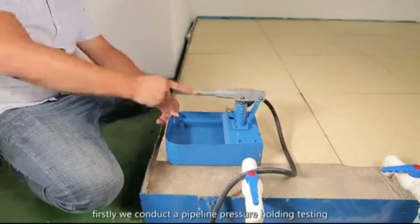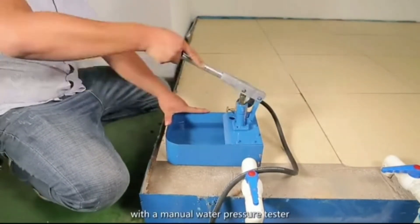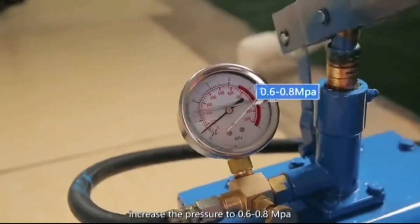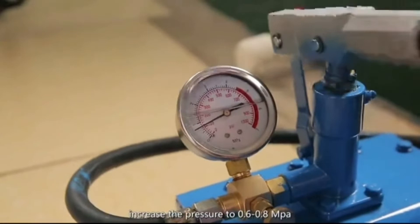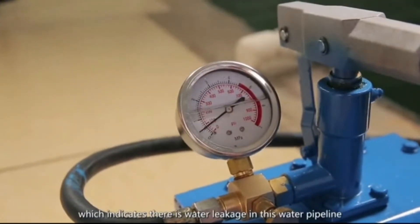Before the leak detection, firstly we conduct a pipeline pressure holding testing with a manual water pressure tester. Increase the pressure to 0.6 to 0.8 MPa. The pressure continues to drop, which indicates there is water leakage in this water pipeline.